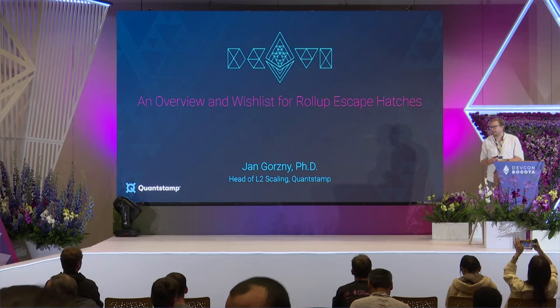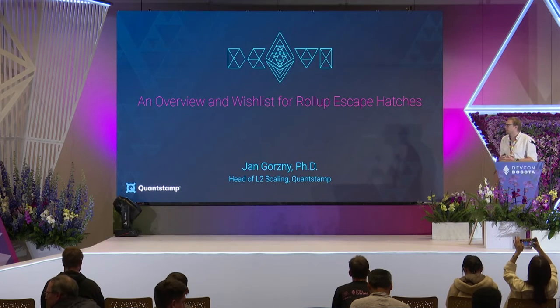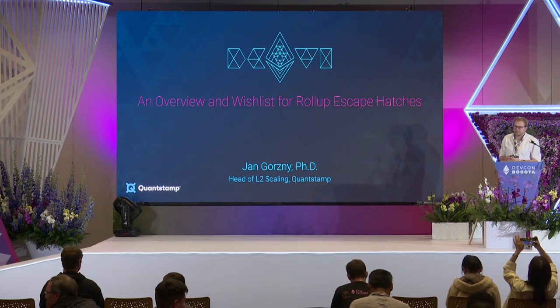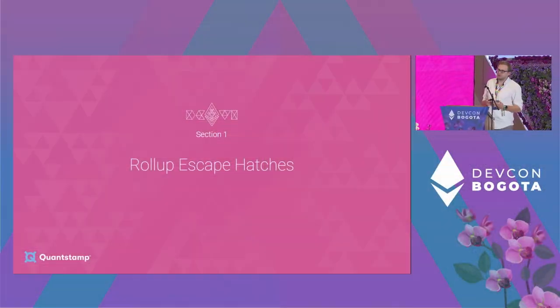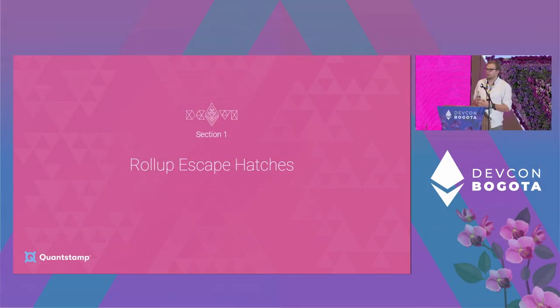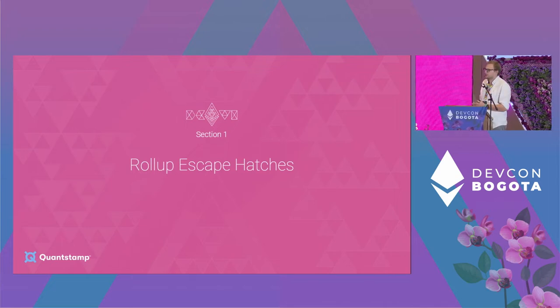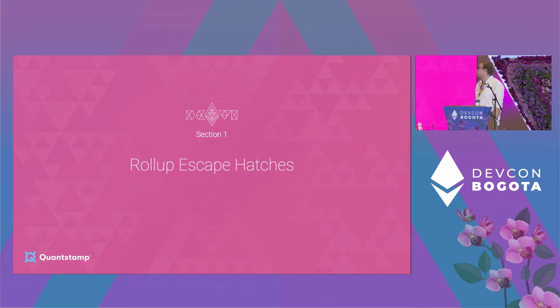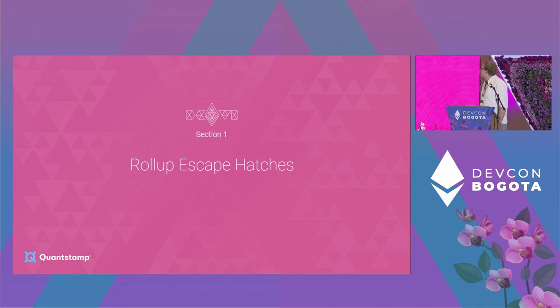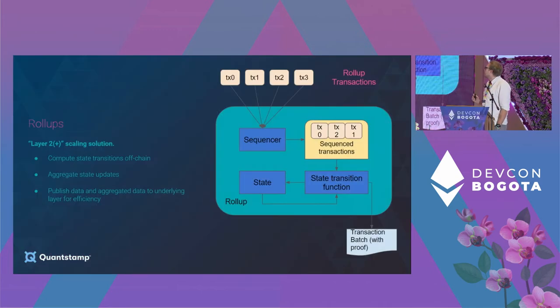I'm really interested in this, and I think a lot of people in the security field should be as well — and that's escape hatches for rollups. You've heard a lot about rollups, so let's give a brief introduction about what they are, then talk about the specific feature I care about and some features that those features should have — what a good rollup might want. This will be similar to my colleague's talk from earlier, except not bridges.